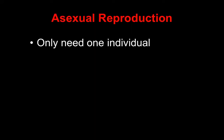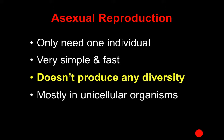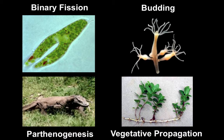Asexual reproduction — you only need one individual, really fast and simple, but it doesn't produce any diversity. It's only producing a clone, so there's no genetic diversity. And as a result of this, it's mostly used in unicellular organisms. Here are some examples — notice there are some examples of multicellular animals that do it, but primarily it's unicellular organisms and plants.